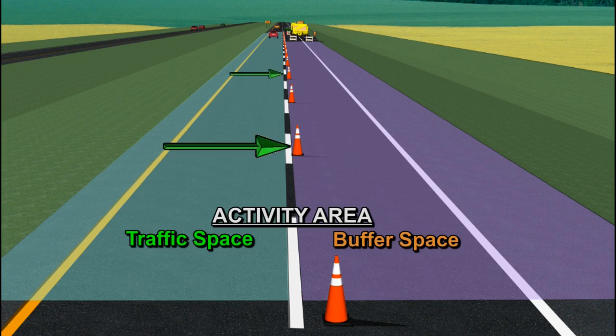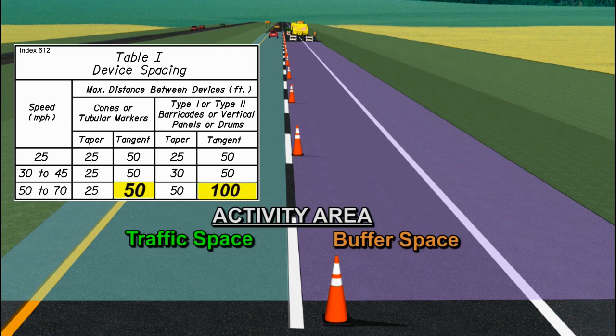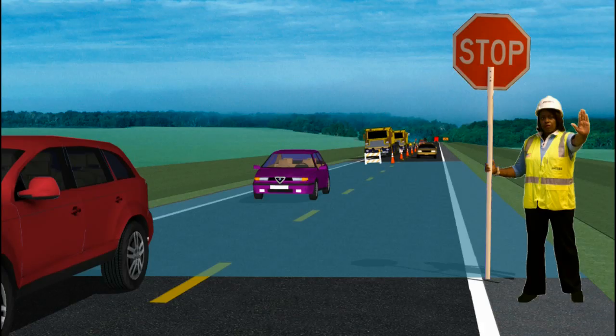Place channelizing devices along the edge of the buffer space. The spacing of channelizing devices is based on the speed limit. For speed limits less than 45 miles per hour, the device spacing should be no greater than 50 feet. For speed limits greater than 50 miles per hour, the device spacing should be no greater than 50 feet for cones or 100 feet for barricades or drums.